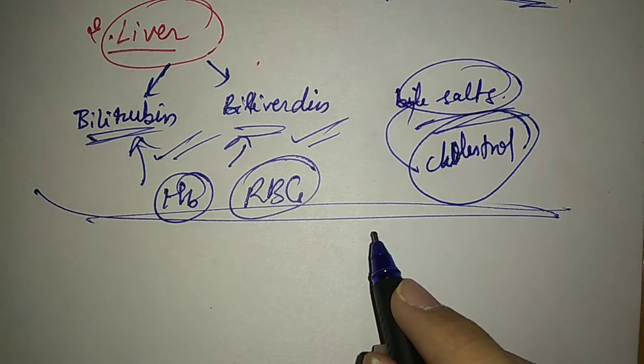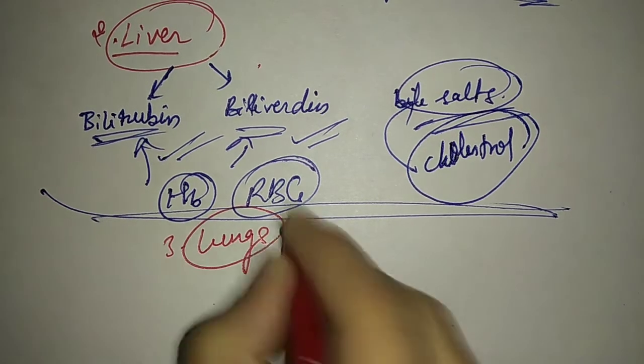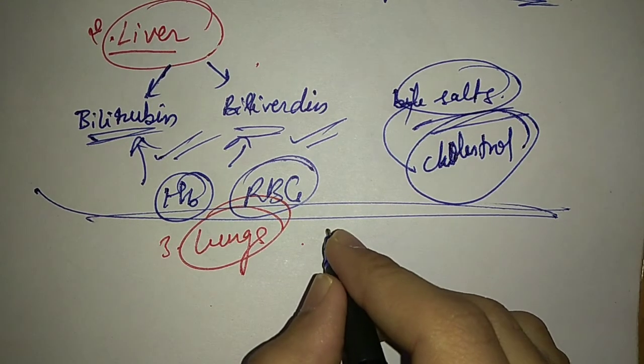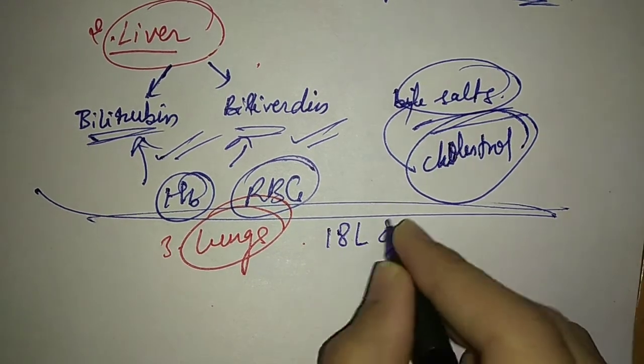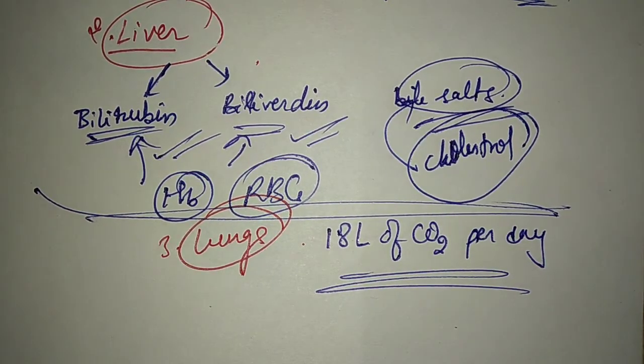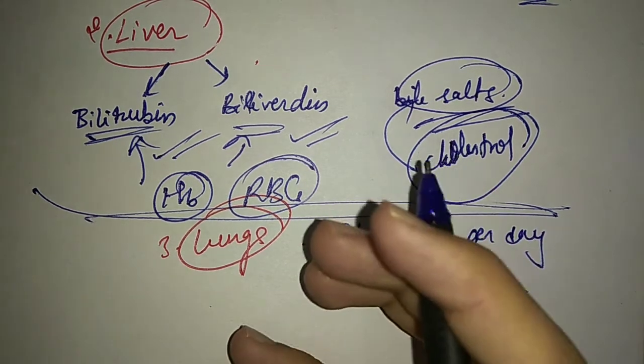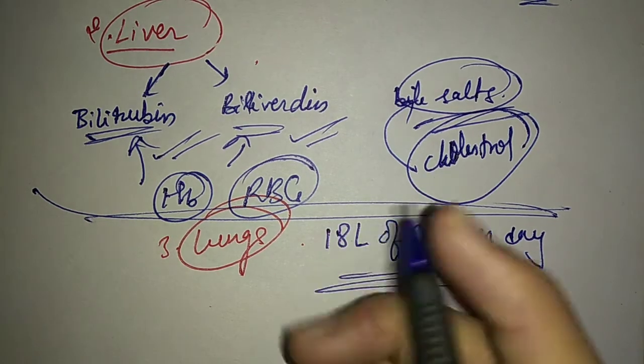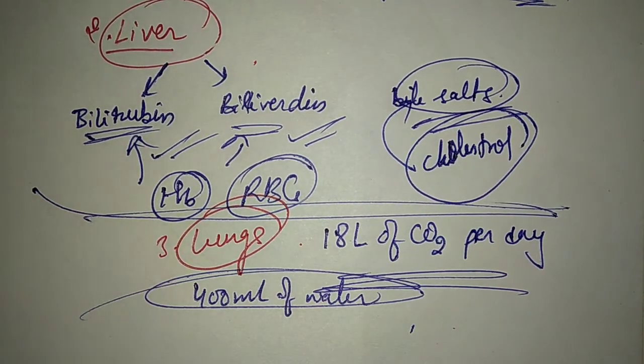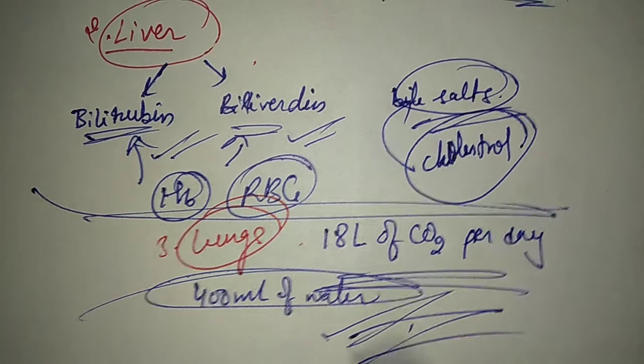Then the third organ involved in excretion is lungs. Lungs help in excretion or removal of 18 liters of CO2 per day. In one day we remove 18 liters of CO2 from our body through lungs which is not of our use. Also when we exhale out, 400 ml of water is also present. So 400 ml of water is also released or excreted in this way.